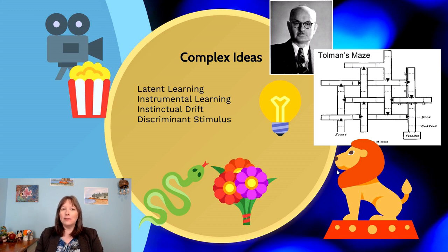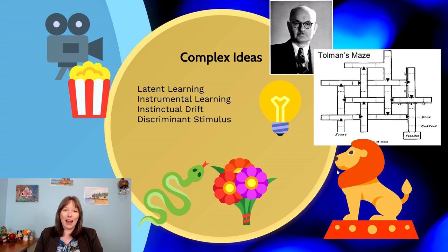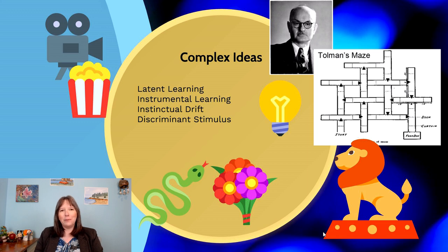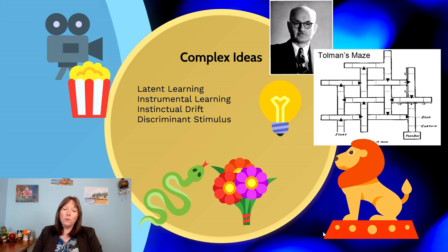Another limit on conditioning is instinctual drift — the idea that all species are hardwired to be more aggressive or gentle, more social or solitary, and conditioning against that is an uphill battle. Many people desire exotic pets like lions, tigers, or raccoons, and can try to train them from a young age, but innate biological instincts will eventually override that training and the instinctual drift will come out. Even dogs have things they simply can't be trained to do because it goes against their biological hardwiring.